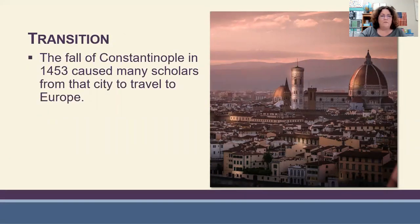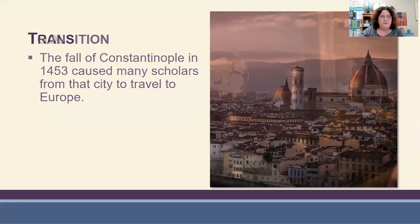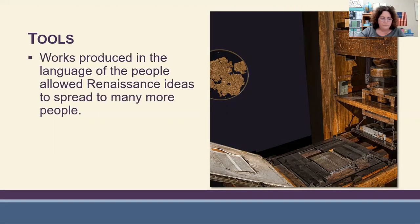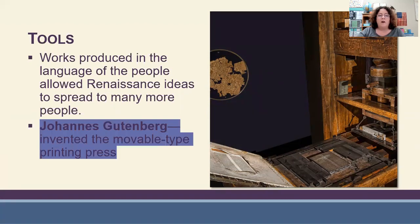The fall of Constantinople in 1453 caused many scholars from that city to travel to Europe, bringing their learning with them. It caused a flood of information to come into Europe. One of the tools that allowed Renaissance ideas to spread was works produced in the language of the people, aided by Johannes Gutenberg's invention of the movable type printing press, which made it possible to mass produce printed materials.